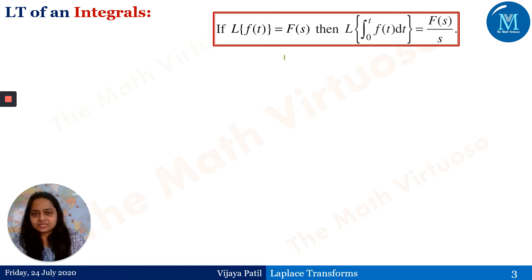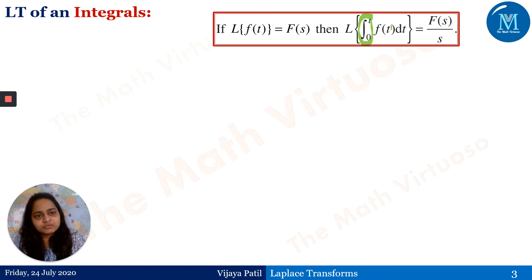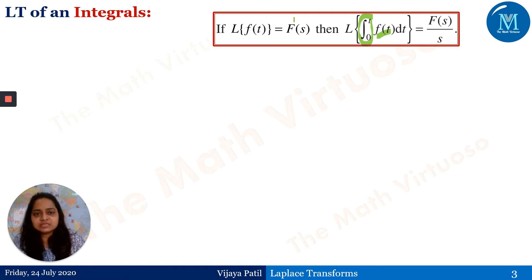What is the statement? The statement says that if the Laplace transform of f(t) is F(s), then the Laplace transform of the integral from 0 to t of f(t)dt is equal to F(s)/s. So if I'm adding this integration from 0 to t with f(t), then the Laplace transform of this entire function is nothing but F(s) divided by s. That means whatever the Laplace transform of f(t) I have, I just have to multiply F(s) with 1/s. It's extremely simple.